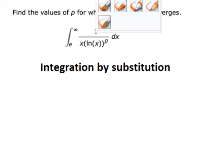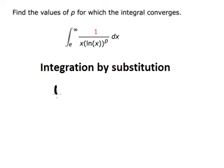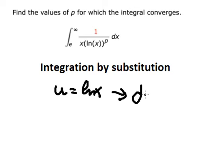I will let u equal to ln(x). So if we take the first derivative of both sides, we have du equals dx over x.